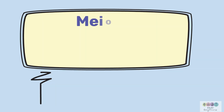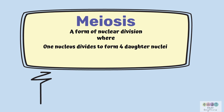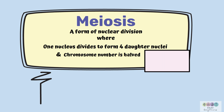Now let's move on to meiosis. Meiosis is a form of nuclear division where one nucleus will divide to form four daughter nuclei and chromosome number is halved. So if the parent nucleus was diploid, each of those four daughter nuclei that are produced will be haploid.